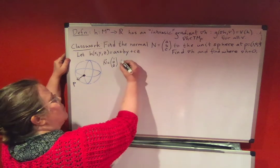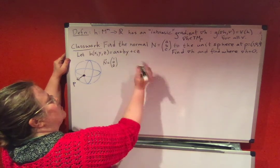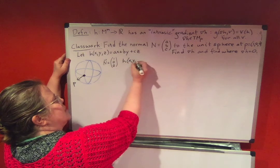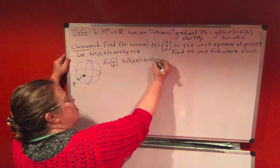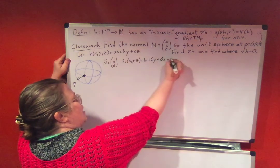So our a equals 1, our b equals 0, and our c equals 0. So h of (x,y,z) is 1x plus 0y plus 0z, which is just plain x.